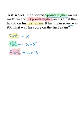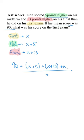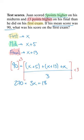We know that the mean score was 90. Therefore, 90 is equal to the sum of all the scores divided by the number of exams he took, three. We sort of work this out a little bit, and we end up finding 3x equals 252. Therefore, x is equal to 84.